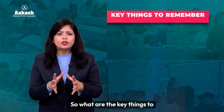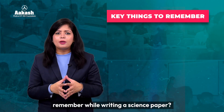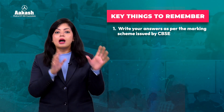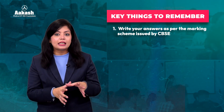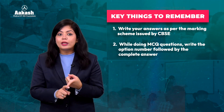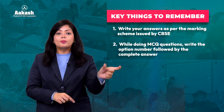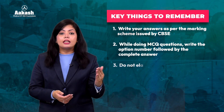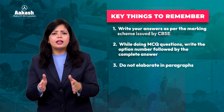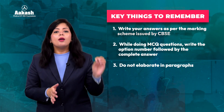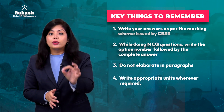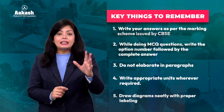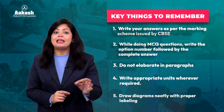So what are the key things to remember while writing a science paper? First and foremost, write your answers as per the marking scheme issued by CBSE. Secondly, for MCQ questions, write the option number followed by the complete answer. Point number three, do not elaborate in paragraphs — point-wise answers only. Point number four, write appropriate units wherever required. And lastly, draw diagrams neatly with proper labeling.